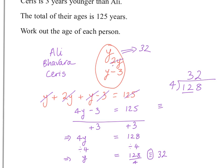So y is 32, so Ali in this case would be 32. Bhavara would be twice as much, which would be 64. And then here Ceris would be y minus 3, which is 32 minus 3, which would be 29 years old.